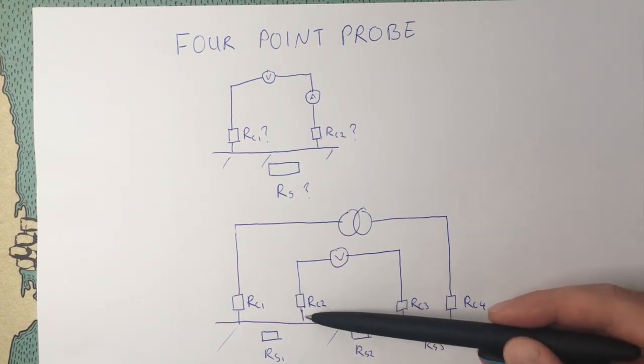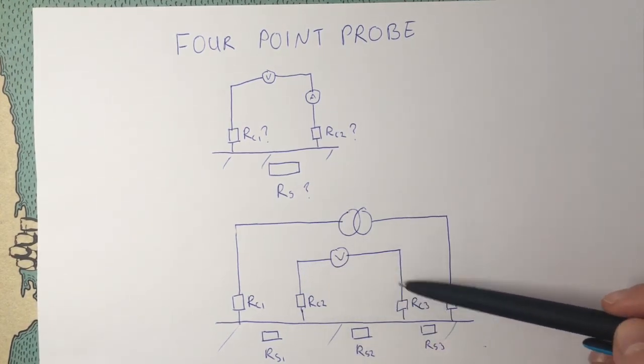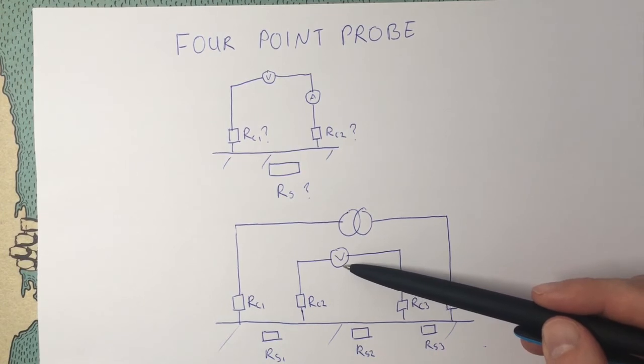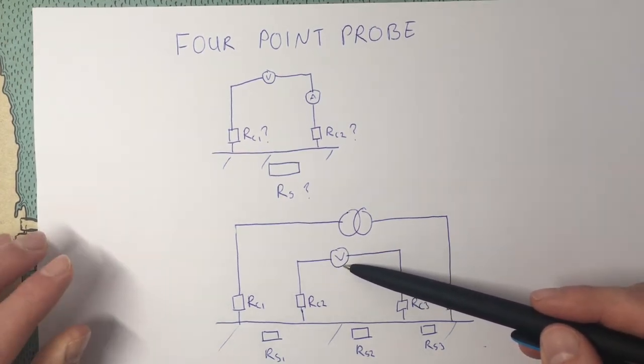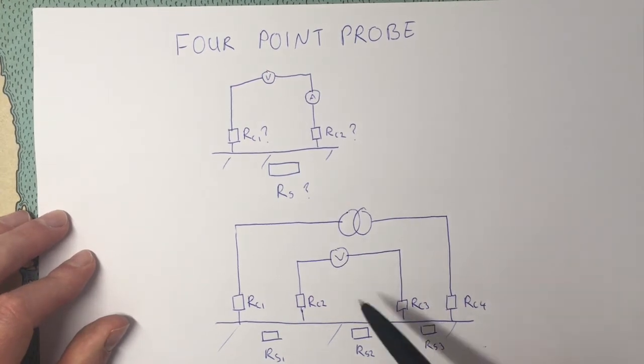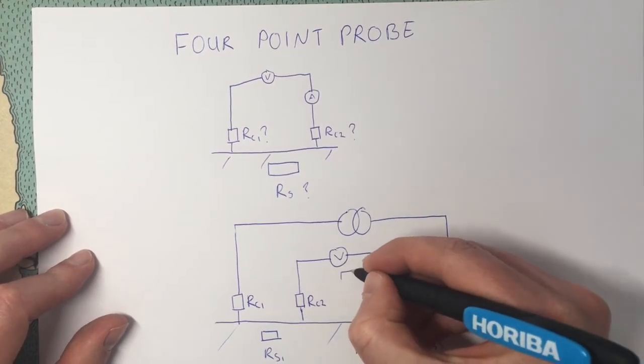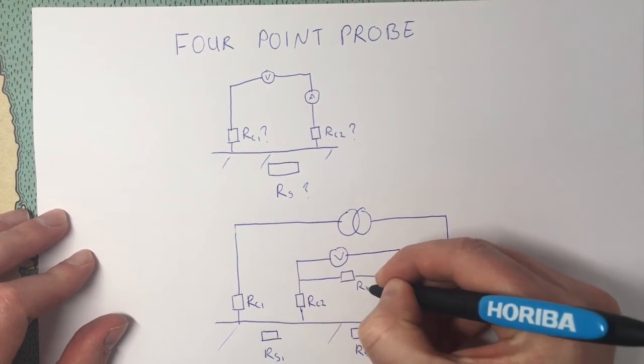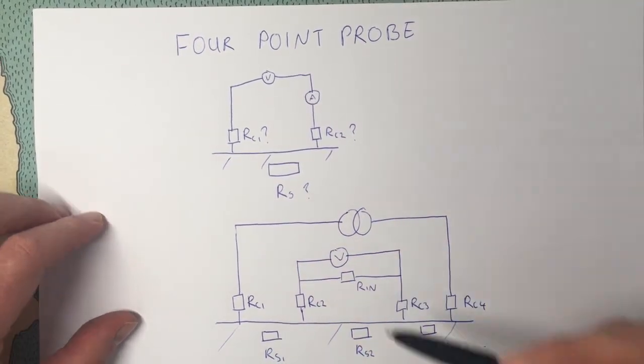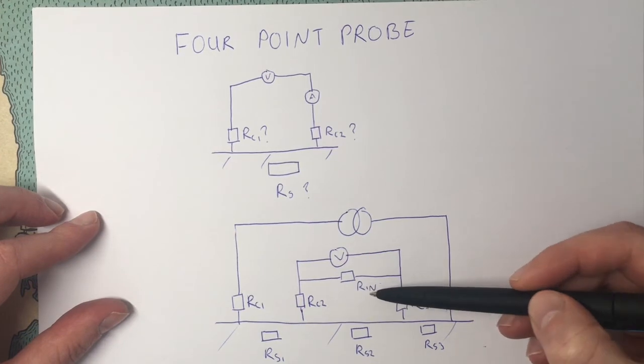But the difference here is that this voltmeter has a very high resistance, very high input impedance. An ideal voltmeter has an infinite input impedance. But usually this is very high.